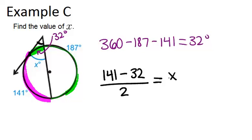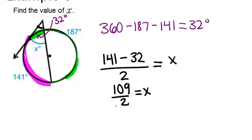And 141 minus 32 is 109, and 109 divided by 2 is 54.5.